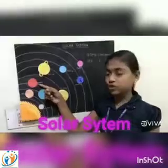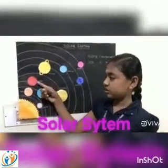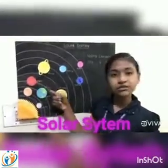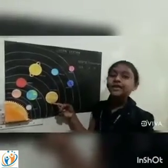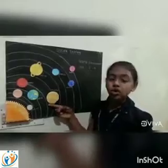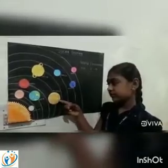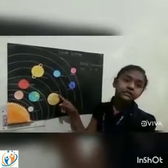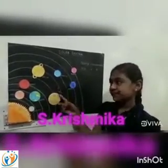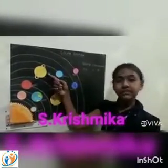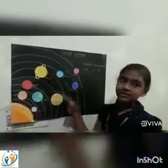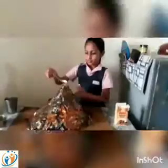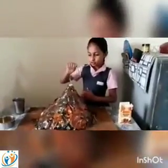Jupiter is the biggest planet in the solar system. Soil is the surface. Jupiter takes five years to orbit the sun.